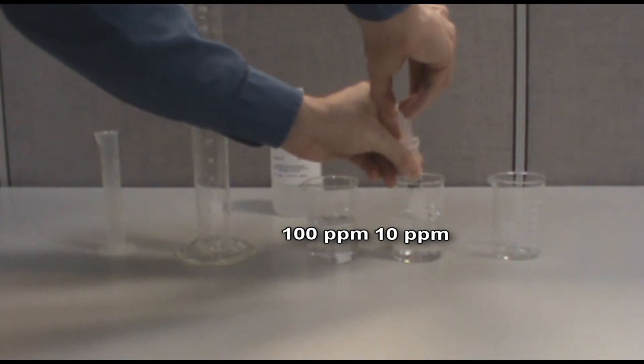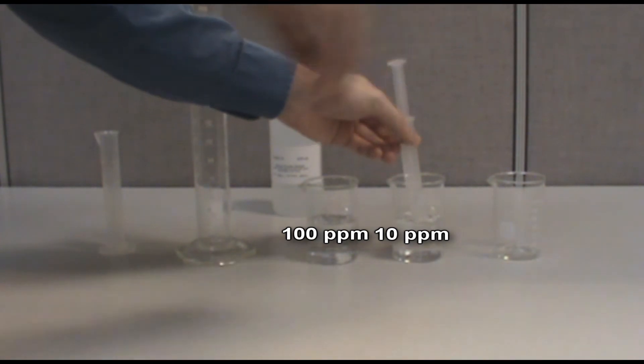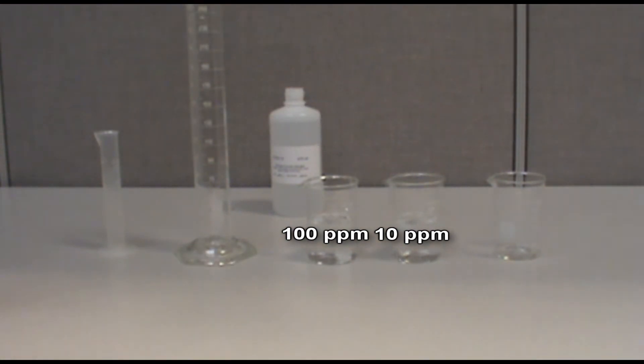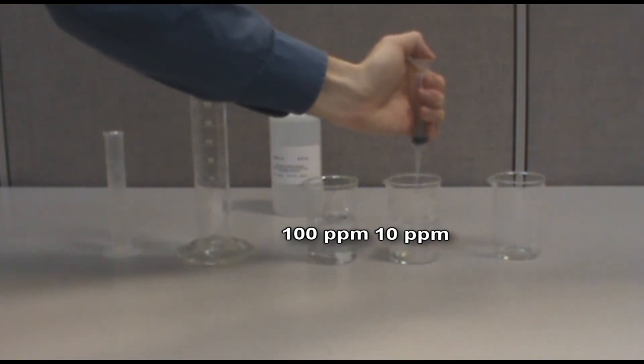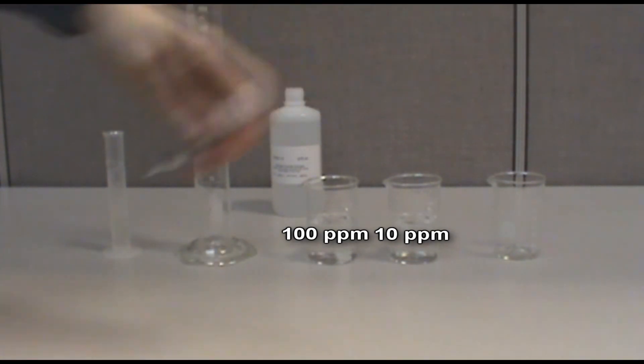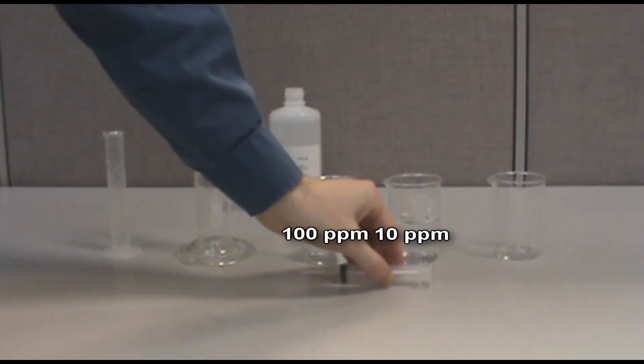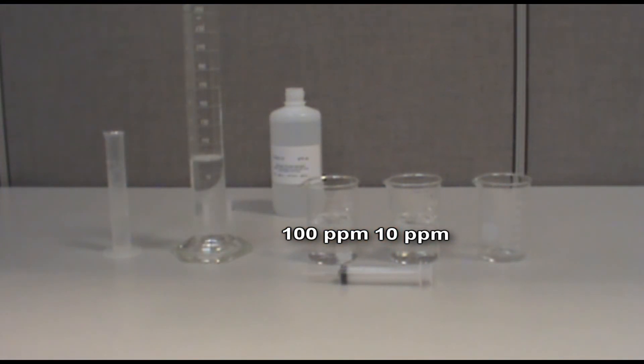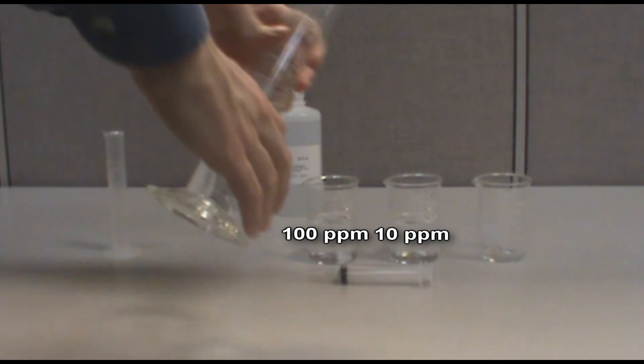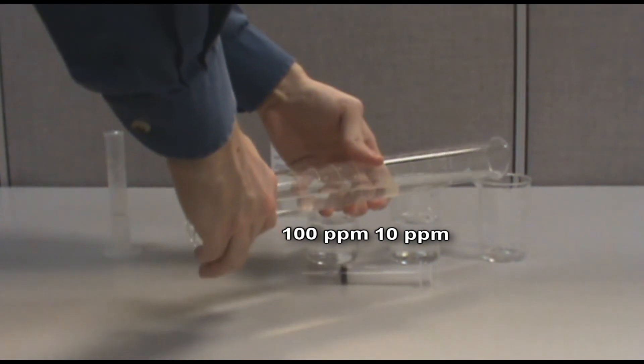Measure out 10 milliliters of your 10 part per million standard using your pipette and graduated cylinder. Then measure out another 90 milliliters of DI water and combine both solutions in your third beaker.